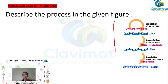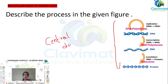This is the central dogma: DNA is converted into RNA through transcription, and RNA is converted to protein through translation.